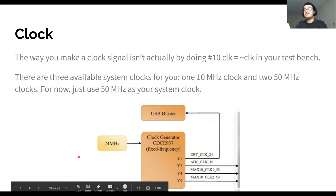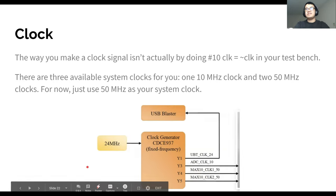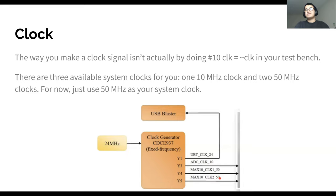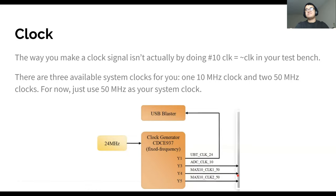Clocks are pretty important. In your test bench you made an always loop that flipped the clock — but that's not how it works on actual hardware. The clocks are inherent to the FPGA. There's a clock generator that outputs a 10 MHz clock and two 50 MHz clocks. The 10 MHz clock is usually used for analog-to-digital conversion, and the 50 MHz clocks are general outputs for your use. For now we'll use 50 MHz as your basic system clock. That's why you need clock dividers — if you want to drive something once per second, you can't just ask the FPGA for a 1 Hz clock; you have to make a clock divider.